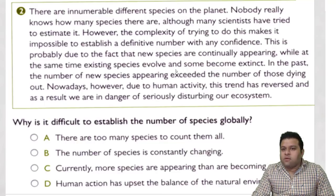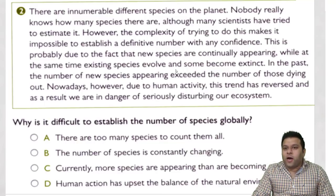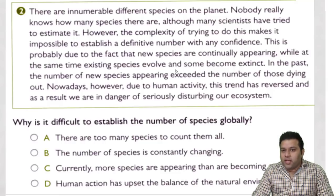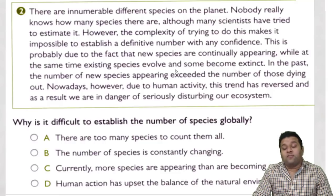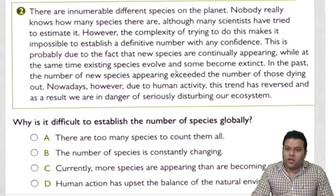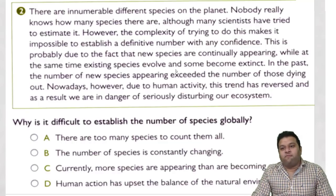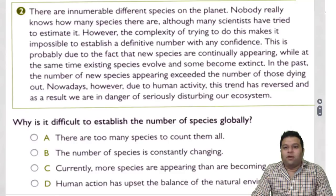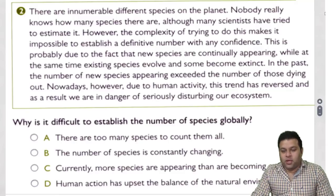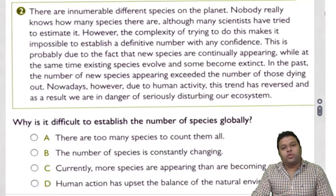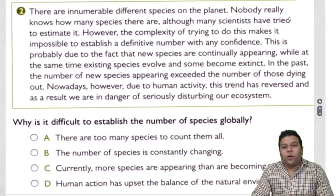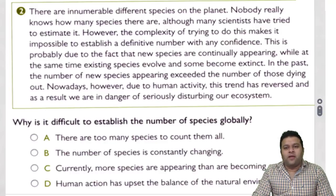What you've learned so far is the easier part. Now I'm going to talk about the most important and most confusing question type: true, false, and not given. Finding the true option is easy, finding the false option is not too difficult, but finding the not given option is always the most difficult.